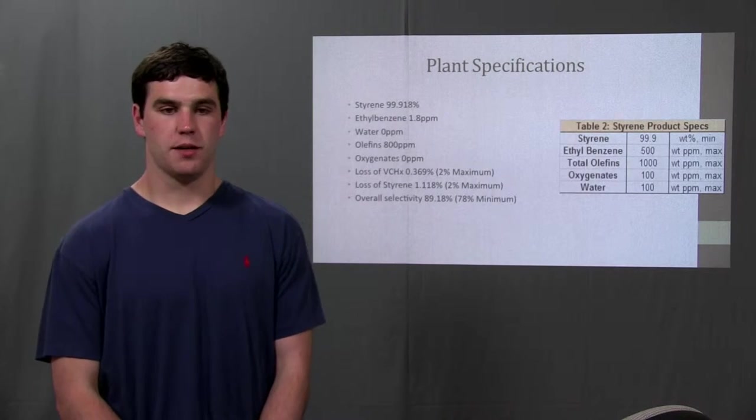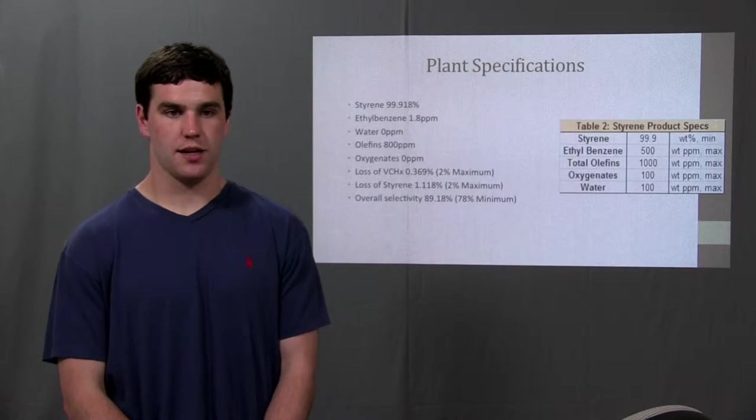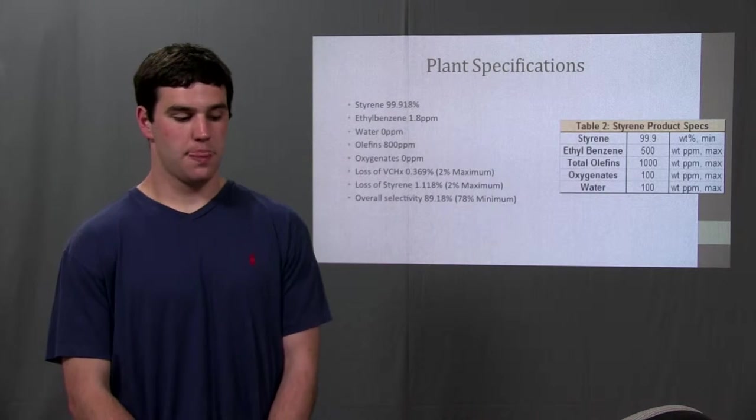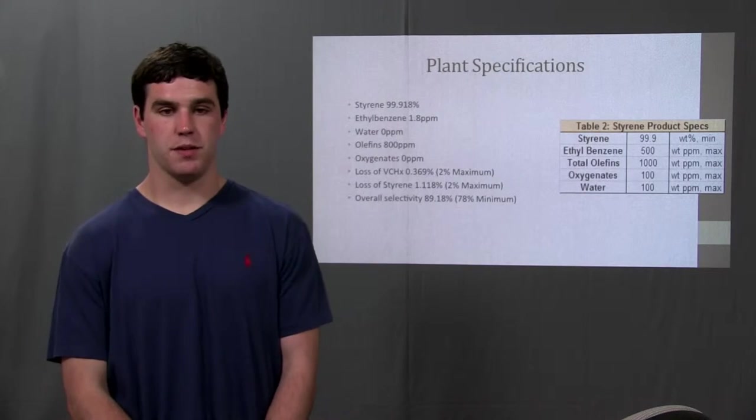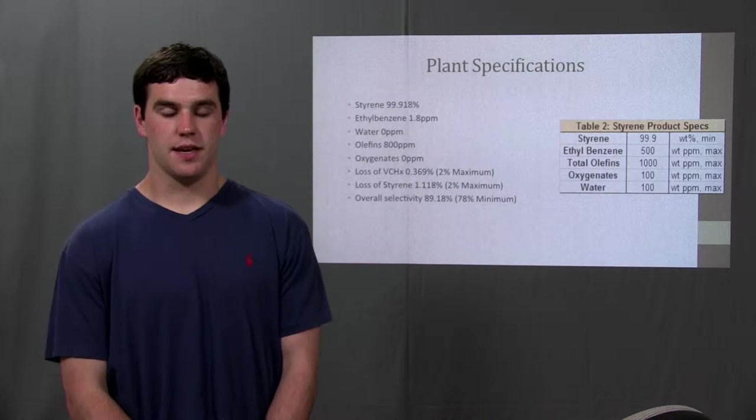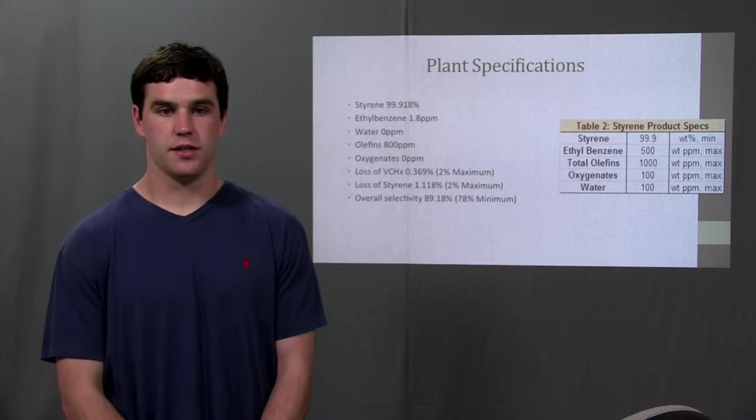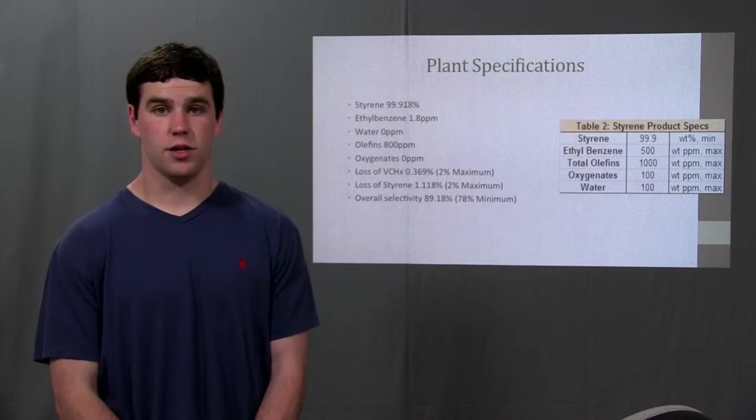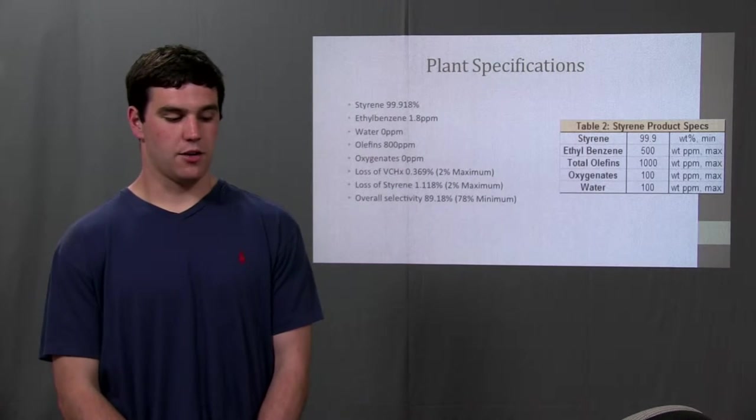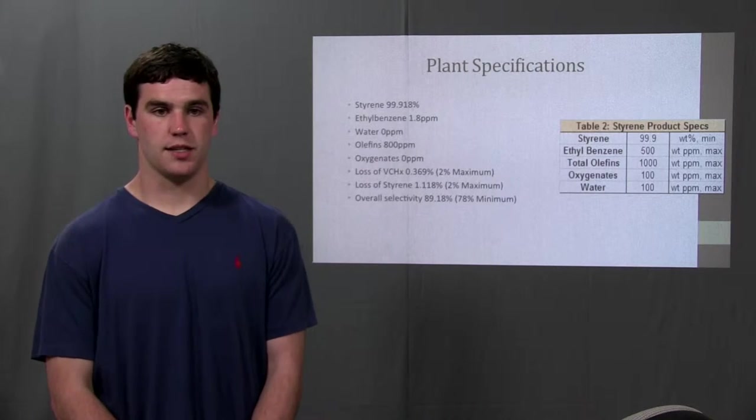The Taiwan plant produced styrene at a purity of 99.9118% and also met the yearly production goals. The product also needed to meet certain ppm limits of components. Ethyl benzene needed to stay below 500 parts per million. Total olefins below 1000 parts per million. Oxygenates and water below 100 parts per million. As can be seen in the data, all of these specs were met as cyclo-octene was the only contaminant present in the product.